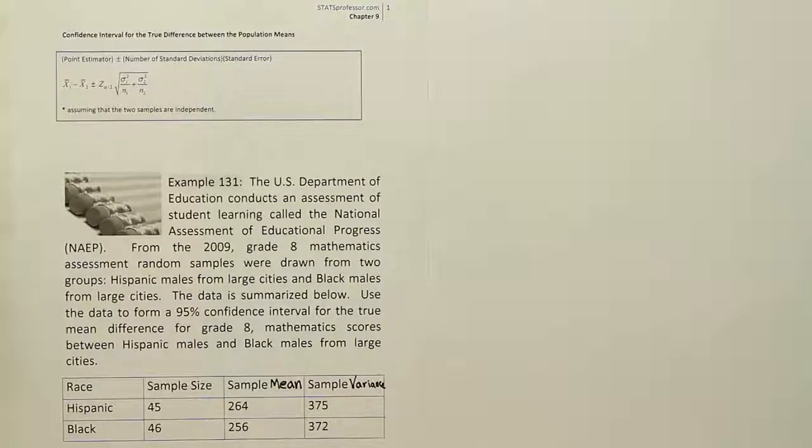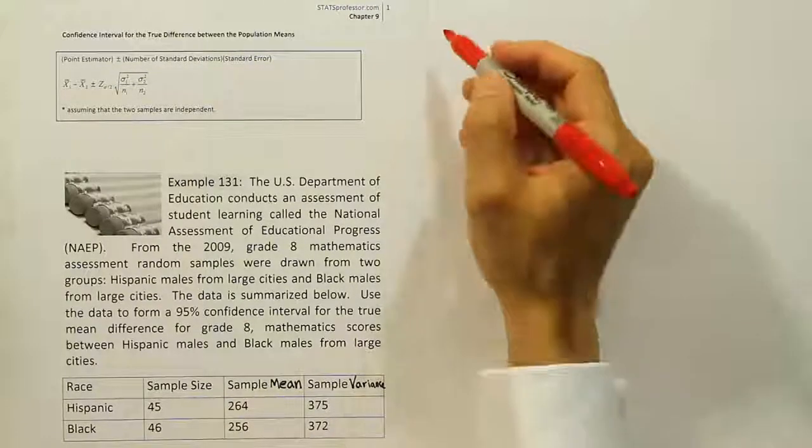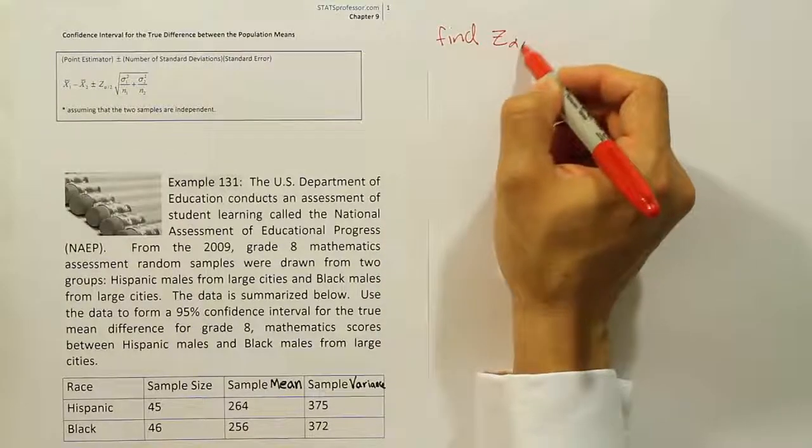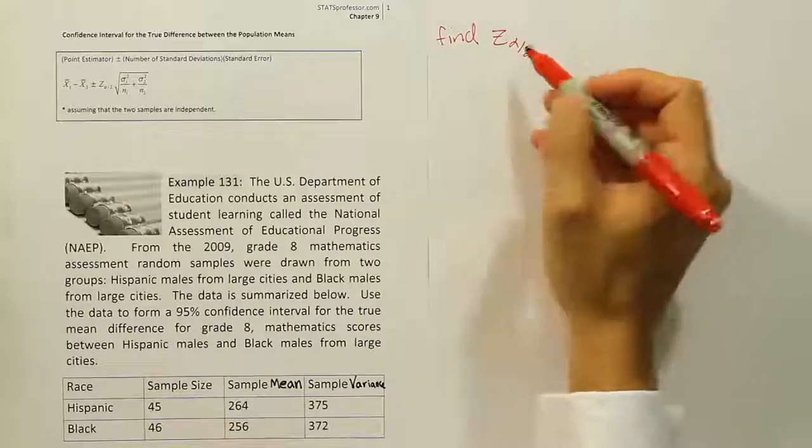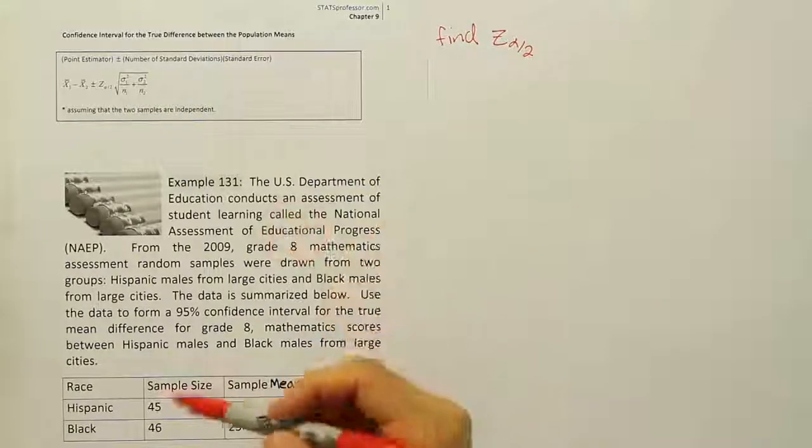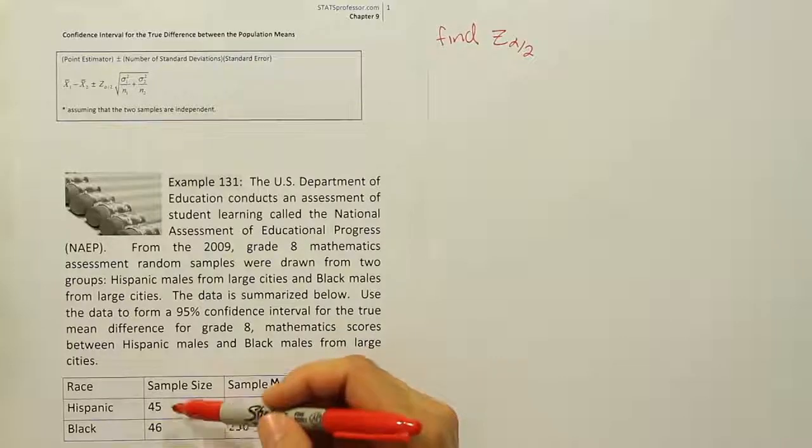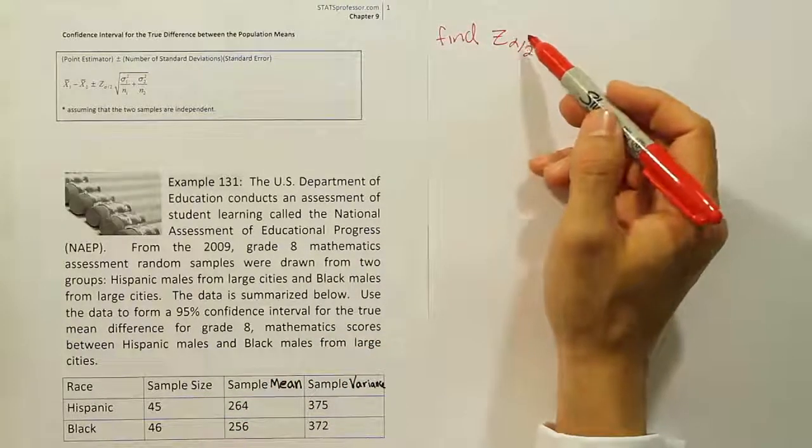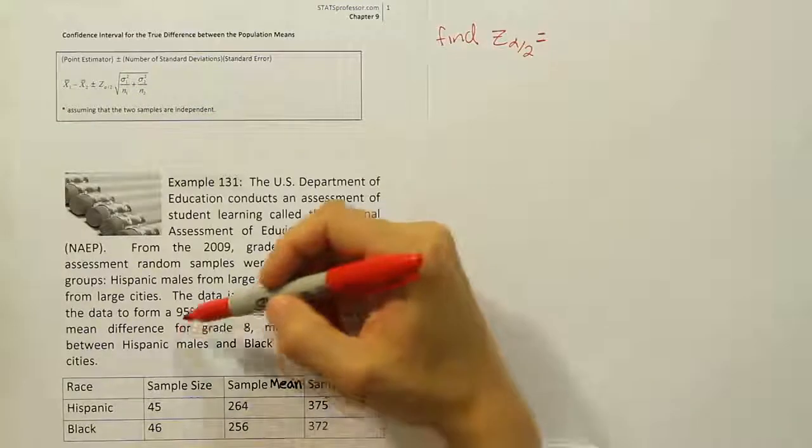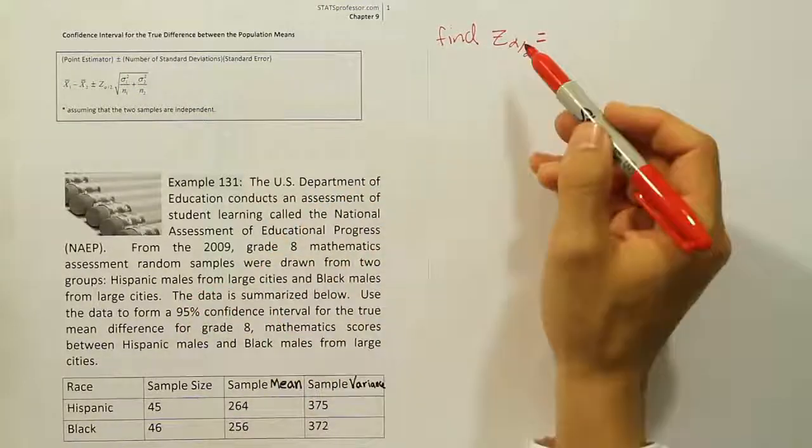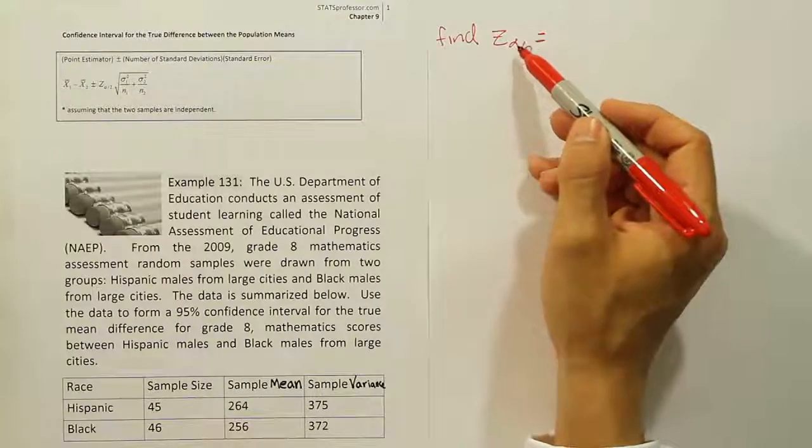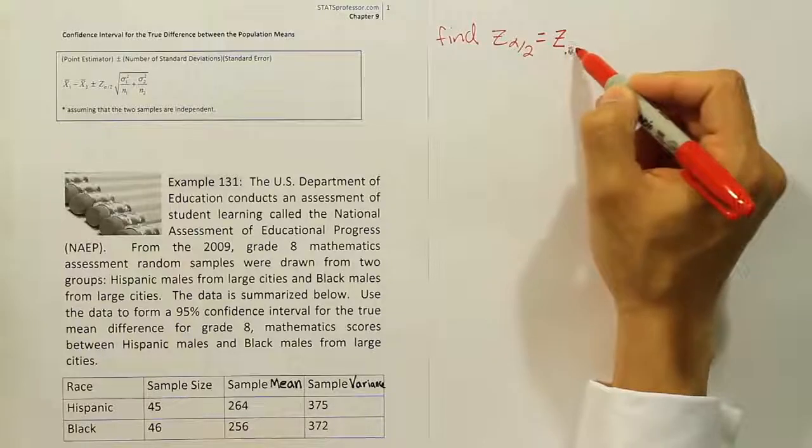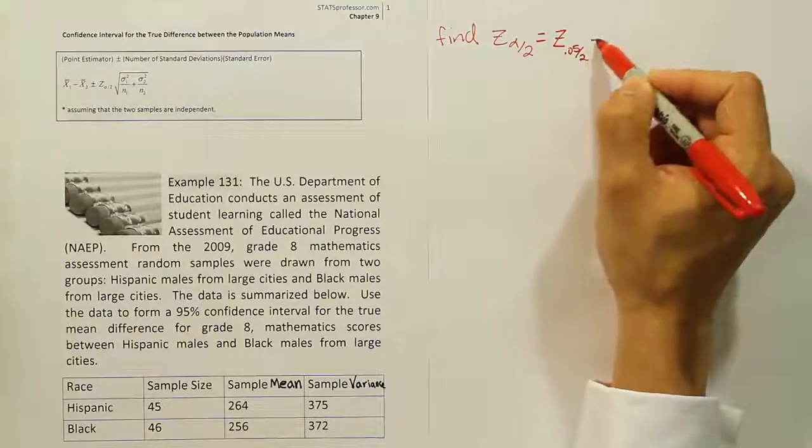So let's go ahead and find our step 2, which is our critical value. In step 2 we need to find the z alpha divided by 2 value. And why is it a z alpha divided by 2 value? Because the sample sizes here are both large. Both of them are over 30 so we're going to use the large sample method to do the problem. We're going to go to the table and look up alpha which is 5% but half of it, because this is alpha divided by 2.